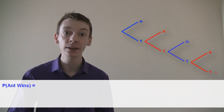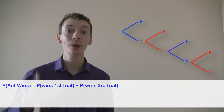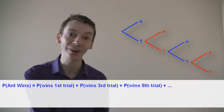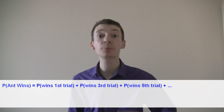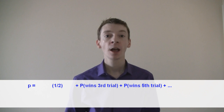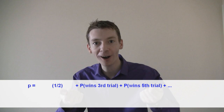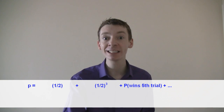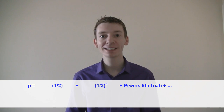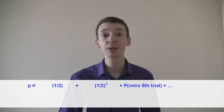The probability that Ant will win is the probability he wins on the first trial, or on the third trial, or on the fifth trial, and so on. Let's call the probability that Ant wins P. Then the probability Ant wins on the first trial is one half. The probability he wins on the third trial — that means Ant and Dec have both tossed a tail, and then Ant wins — so that's one half cubed. The probability he wins on the fifth trial means Ant and Dec have tossed four tails and then Ant wins, so that's one half to the power five.